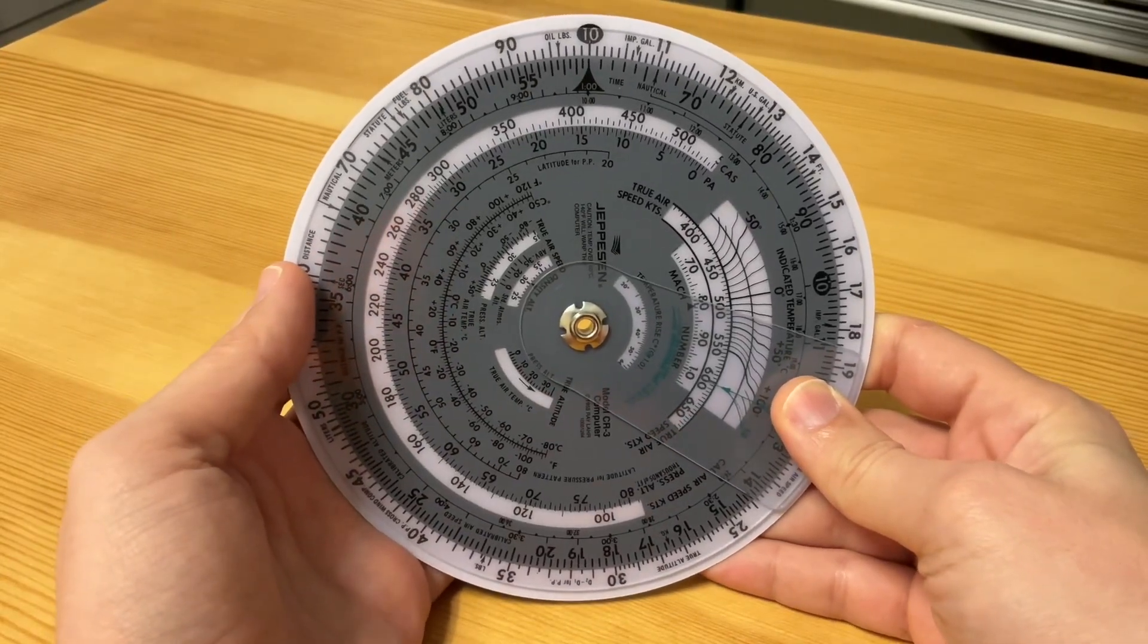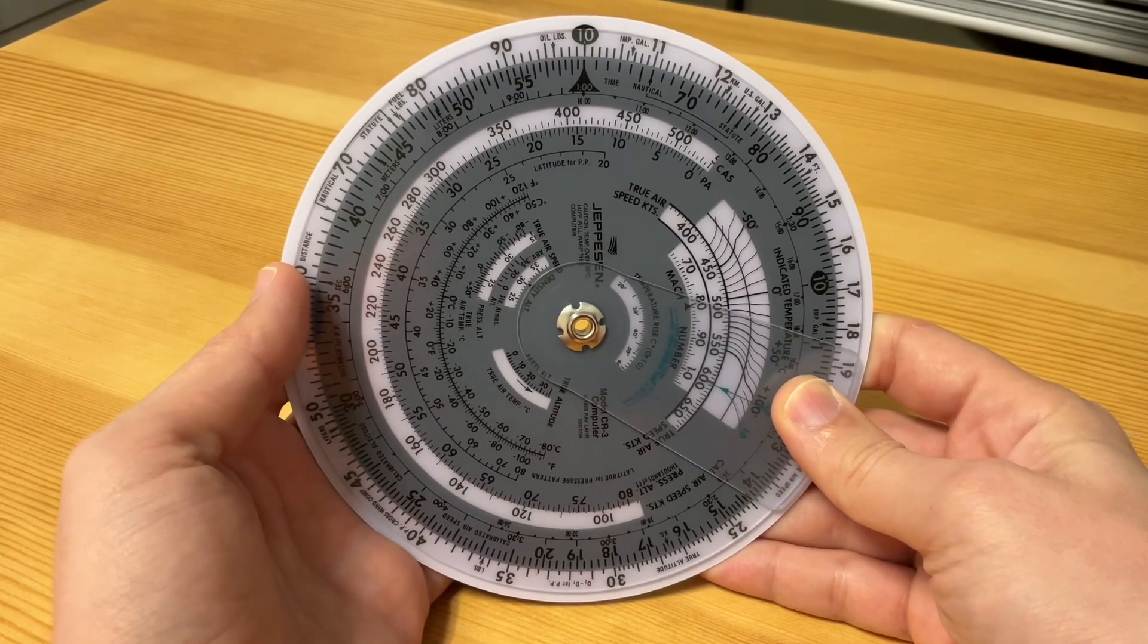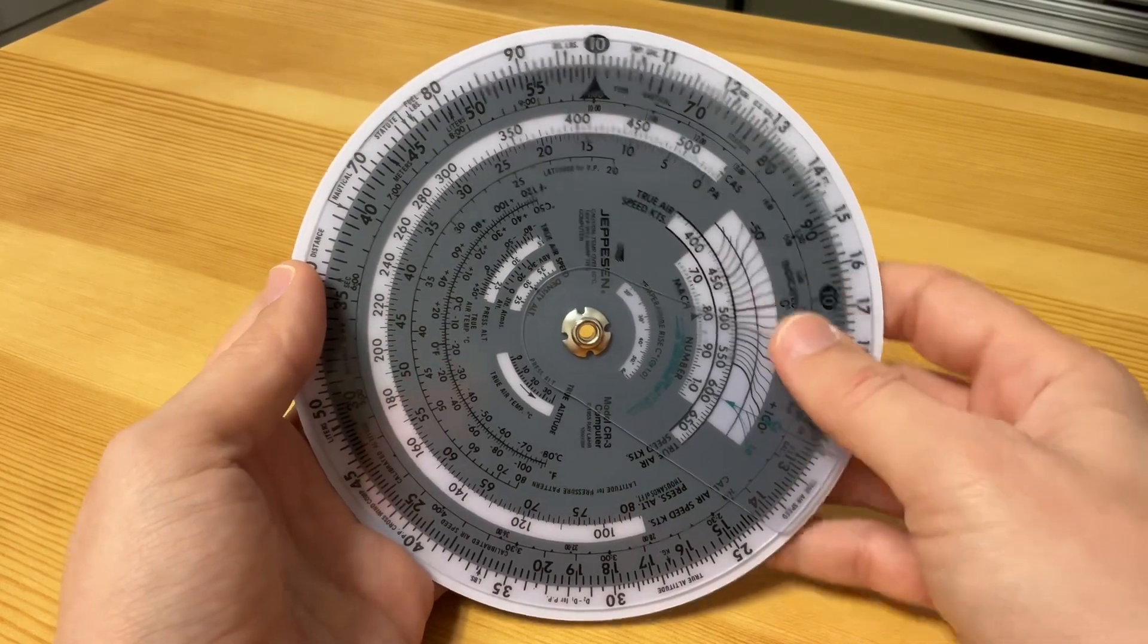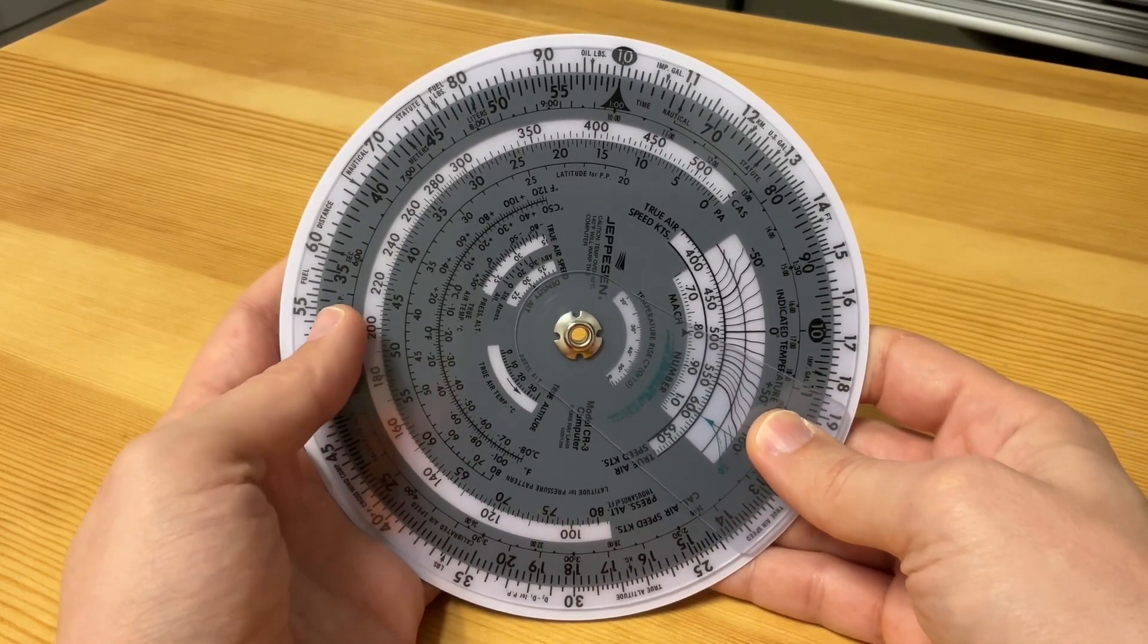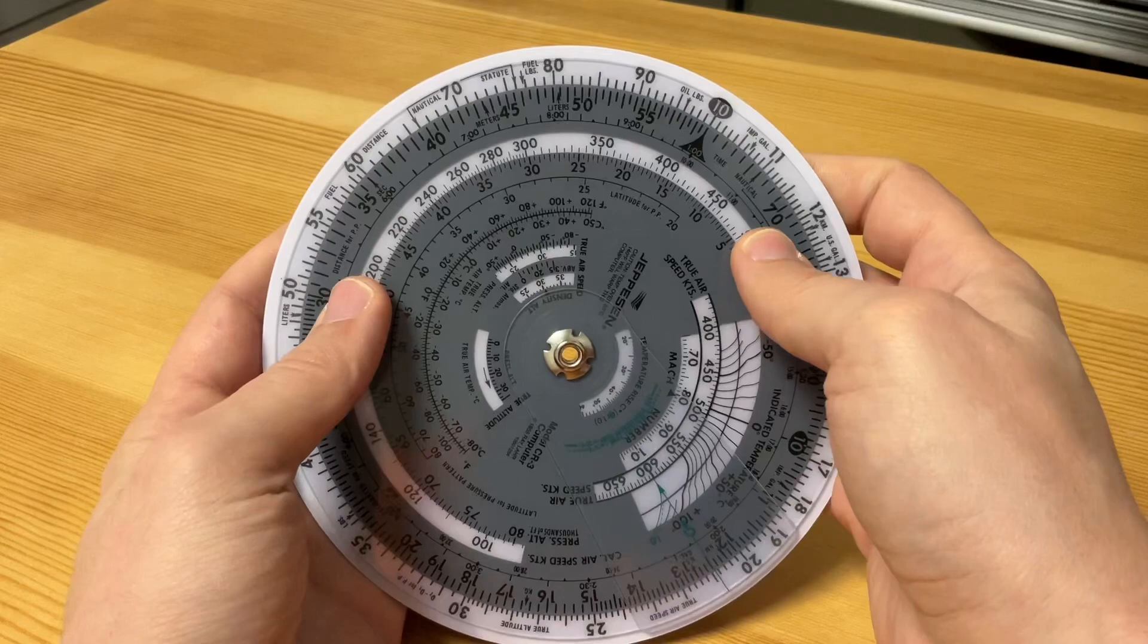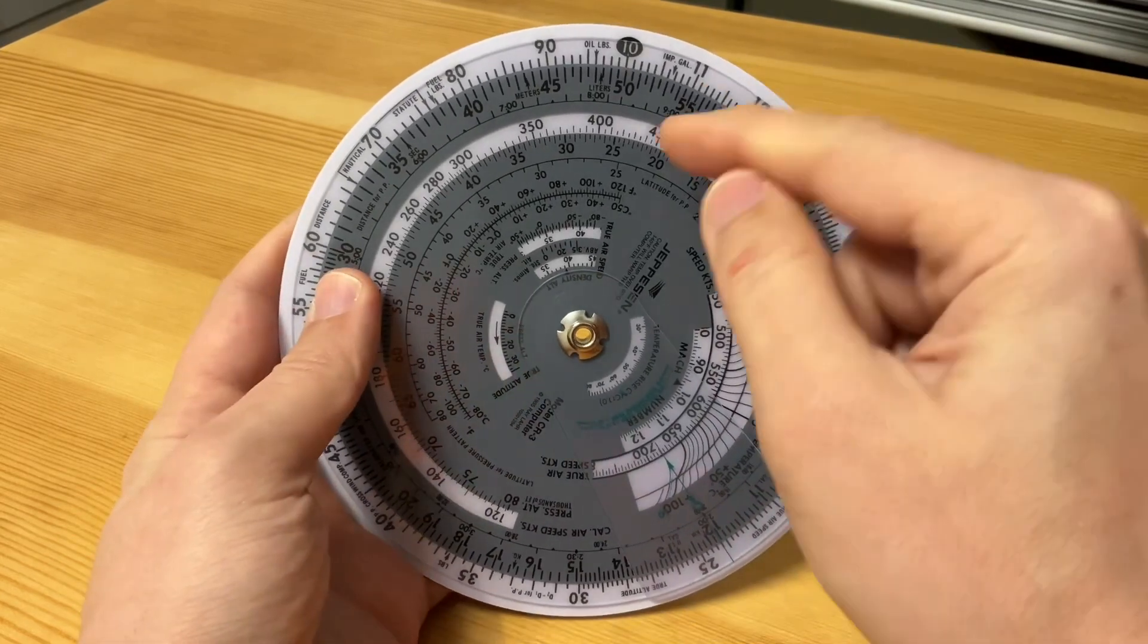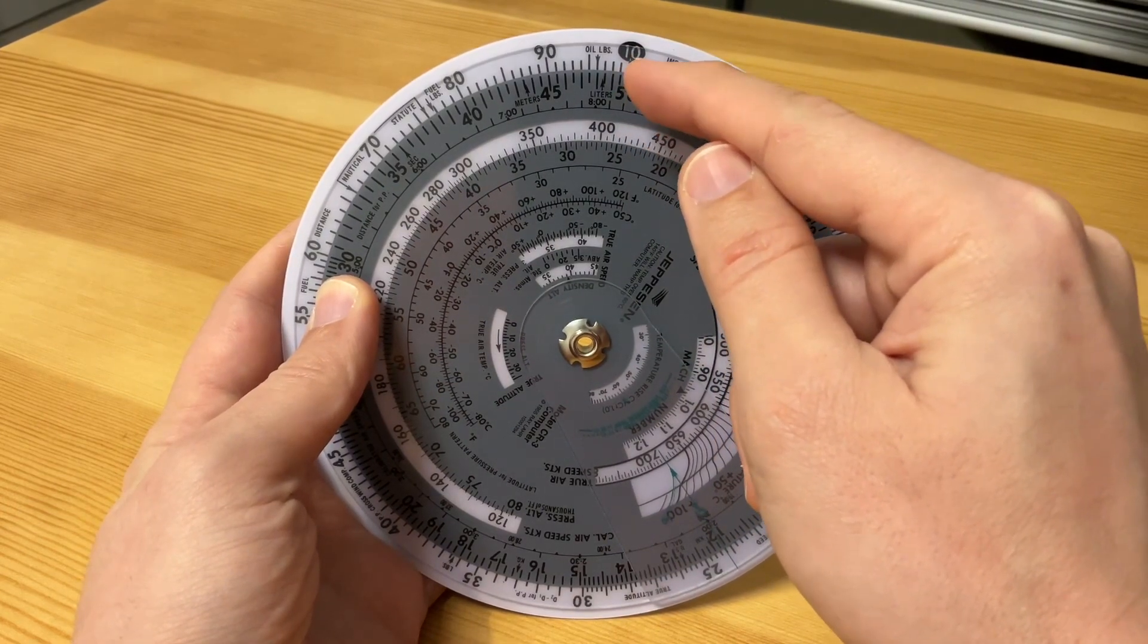Generally, with the slide rule we solve problems using ratios. Right now the ratio is 1 to 1. If I want a ratio of times 2, I would change it to something like this. So if I change this to 5 and 10—5 times 2 equals 10.